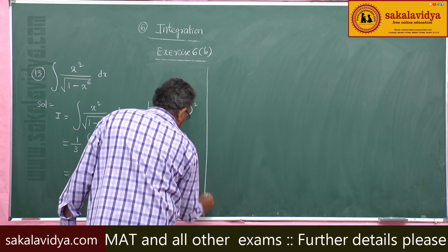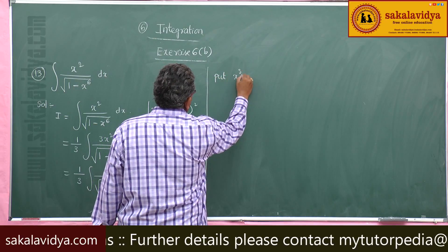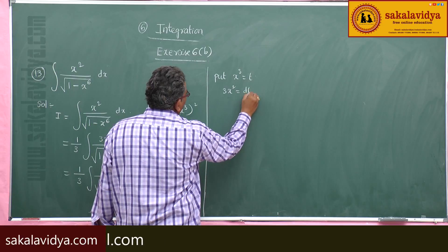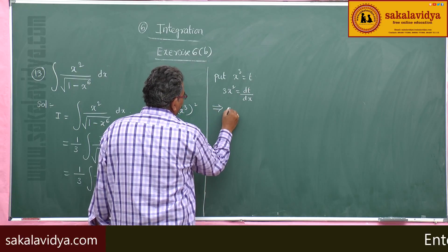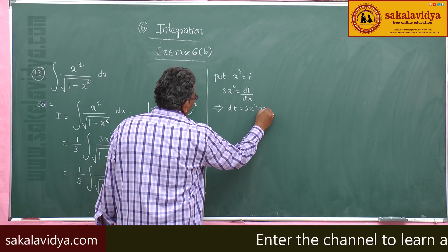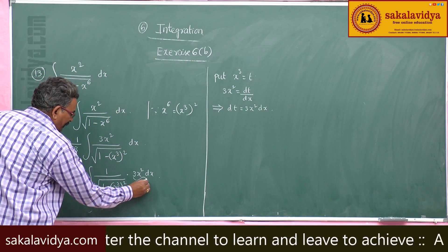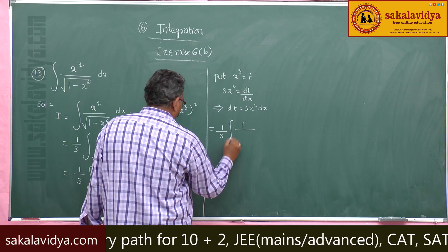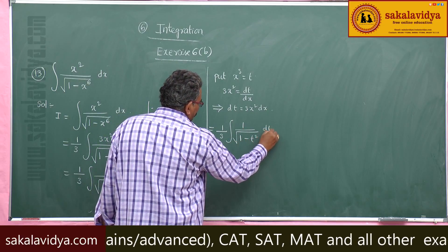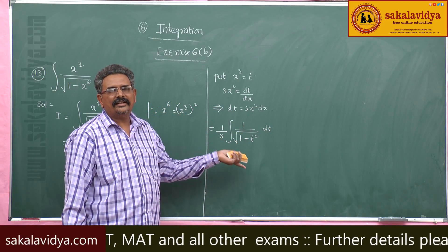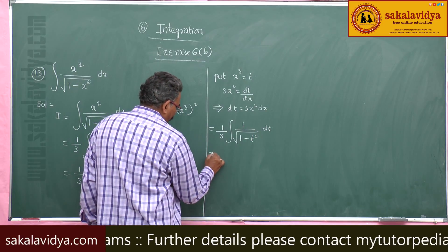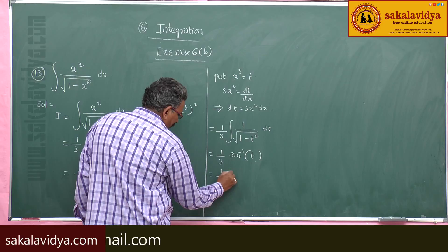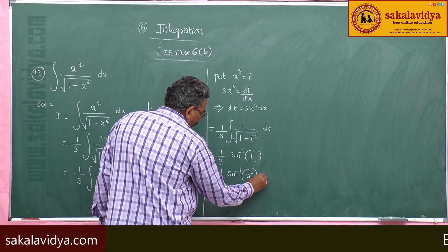Now put x cubed equal to t. Differentiating with respect to x, x cubed differentiation is 3x squared, so dt equals 3x squared dx. Now this 3x squared dx is replaced by dt, giving 1 by 3 times integral of 1 by root of 1 minus t squared dt. This is a standard result, so it equals 1 by 3 sin inverse t. Since t stands for x cubed, the answer is 1 by 3 sin inverse x cubed plus constant of integration.